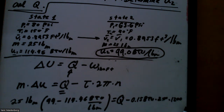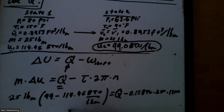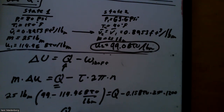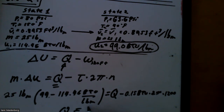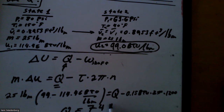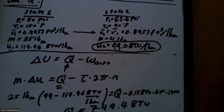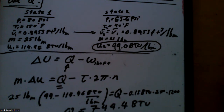With 1200 revolutions, the shaft work gives BTU units consistent with the rest of the equation. Punching everything into the calculator, Q equals −744.4 BTU, meaning the system lost heat.